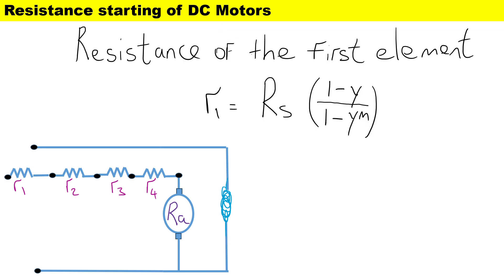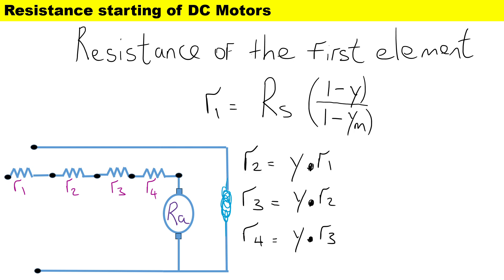To calculate the resistance of the first element R1, it is Rs multiplied by (1 minus y) divided by (1 minus y to the power of m), where m is the number of elements. To calculate R2, it is simply the ratio y multiplied by R1, followed by R3 which is y times R2, and the final element R4 is y times R3.